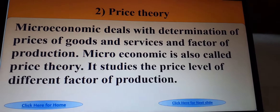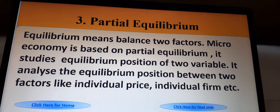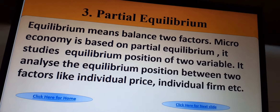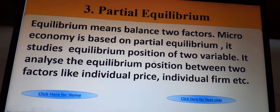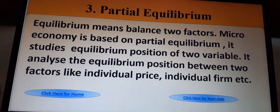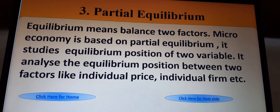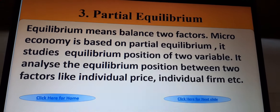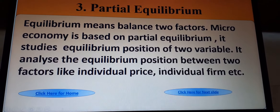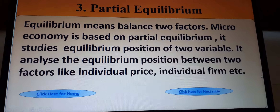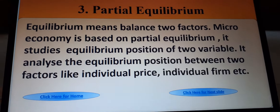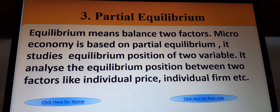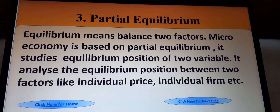The third feature is partial equilibrium. Equilibrium means balance between two factors. Microeconomics is based on partial equilibrium — it studies the equilibrium position of two variables. For example, when demand and supply are equal, price becomes stable. It analyzes equilibrium between factors like individual price, individual firm, etc.